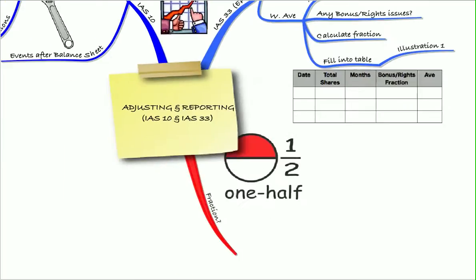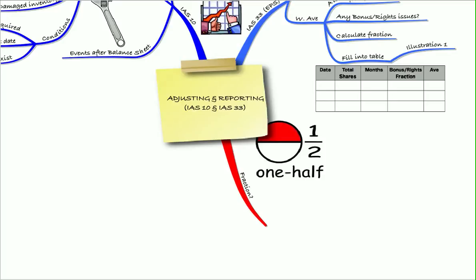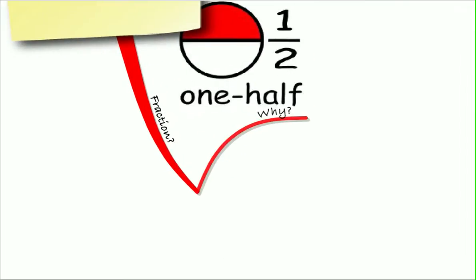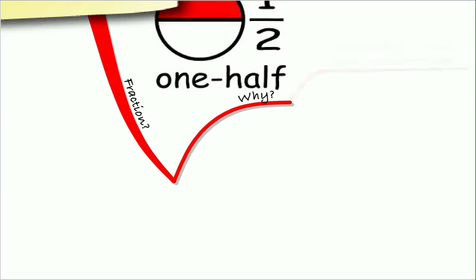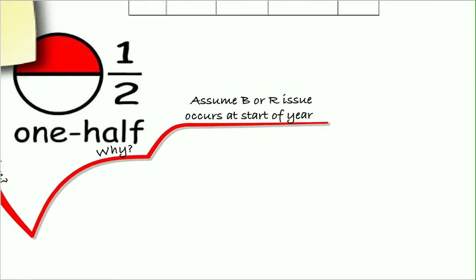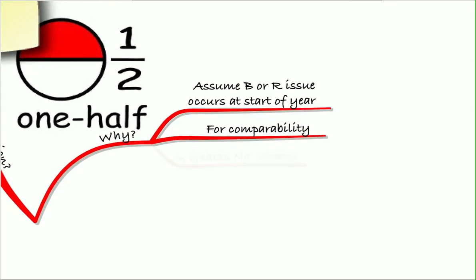Remember that we had this fraction that we might calculate if we had a bonus or a rights issue. Why did we have that? Well, it was for comparability. What we were doing was we were assuming that the bonus or rights issue occurs at the start of the year so that we can adjust the weighted average number of shares to compare it to last year. We'll also adjust last year's earnings per share to make it comparable. So this is all about comparability.